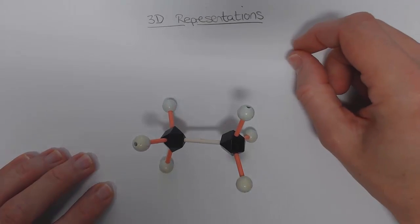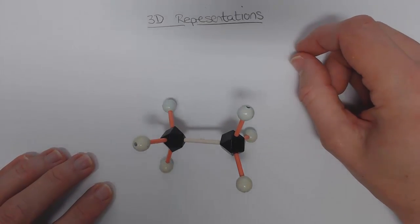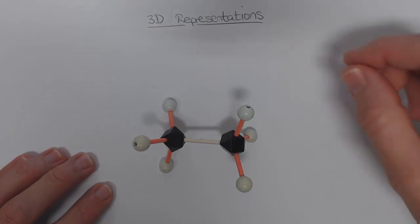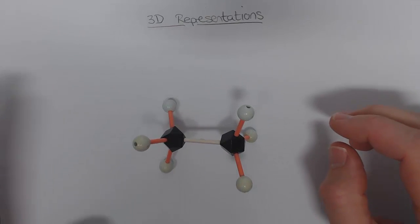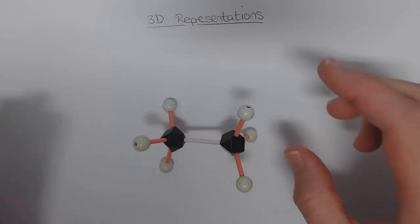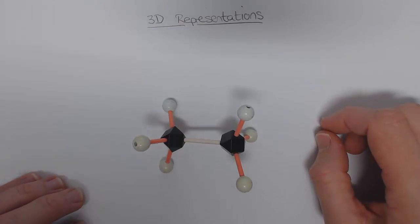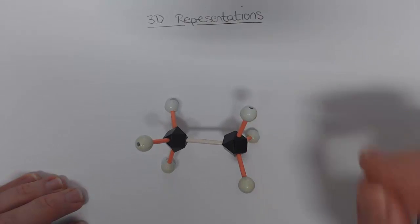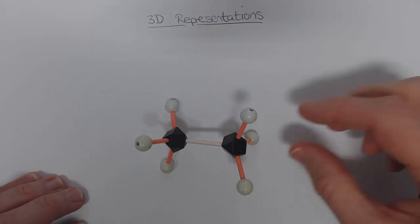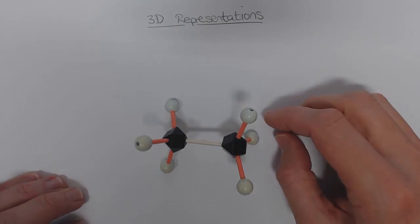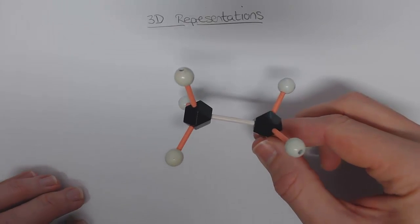I want to spend a few minutes having a look at 3D representations of organic compounds. In organic chemistry, carbon is tetrahedral, and because of that there is a three-dimensional shape to all organic compounds. We need to learn the methods that organic chemists use in order to represent the three dimensions of molecules.